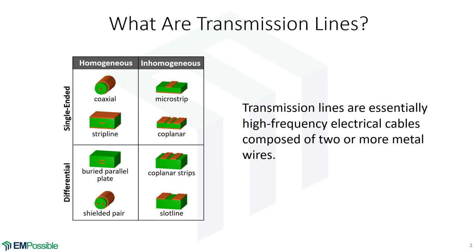A very common single-ended line is a coax: a signal line in the middle and a big ground around the outside. Circuit boards very often have a buried strip line, where the signal line is buried between two large ground or power planes. The most common line you'll see on a circuit board is a microstrip — just a wire going along the board with a dielectric and a big ground plane underneath. There's also a coplanar line with a signal line and two big ground planes next to it, sometimes with a ground plane underneath too. All of these have a signal line and big, huge ground lines around — they're not symmetric.